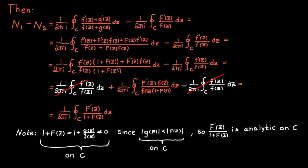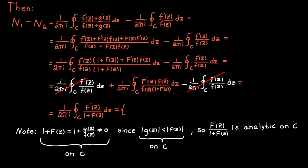Since the integrand is analytic and we are integrating over a simple closed curve c, by Cauchy's integral theorem the integral equals zero, which means n1 minus n2 equals zero. Therefore n1 equals n2: the functions f and f plus g have the same number of zeros inside of c, and the theorem is proved. Thanks for watching.